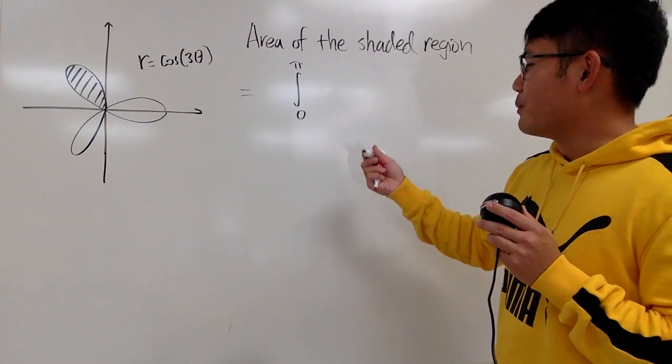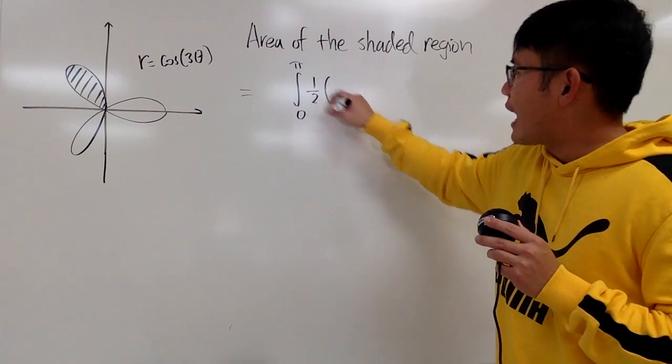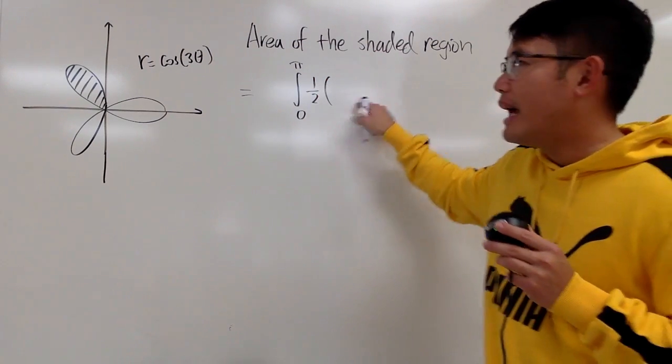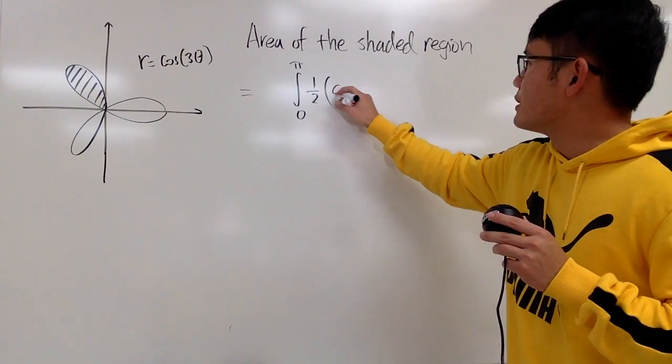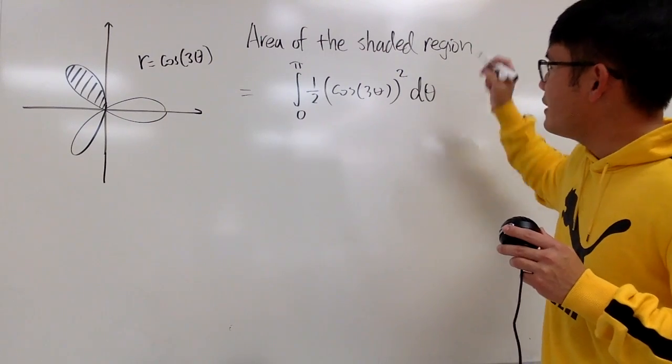So just remember, you can just go from 0 to pi, and then you get whole graph. And then you have to remember the formula for the area of the polar curve region. You do 1 half times r squared, and you put this down, which is cosine of 3 theta, and then you square that, and then put down the d theta.